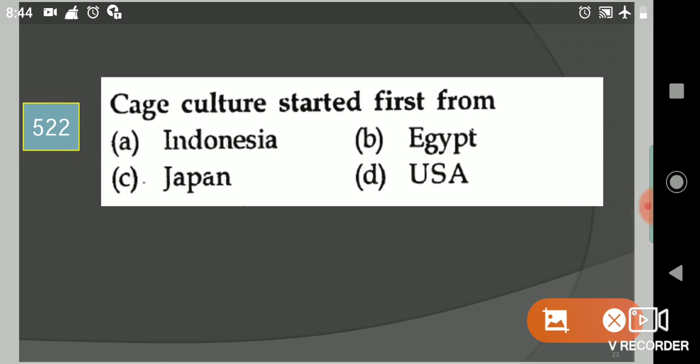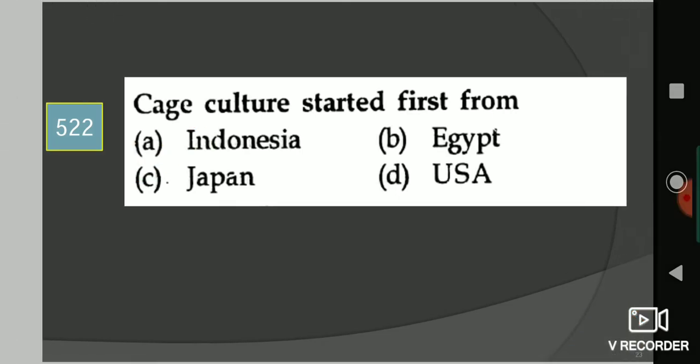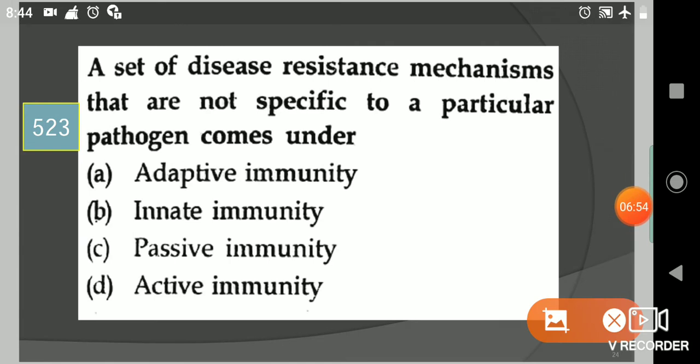Next question: Cage culture started first from? Your options are Indonesia, Egypt, Japan, USA. Your answer is option A, Indonesia.